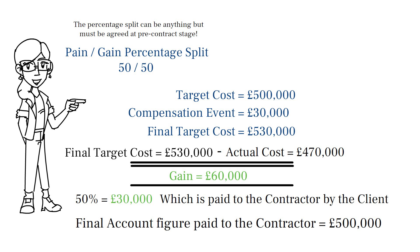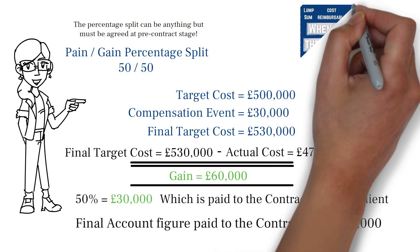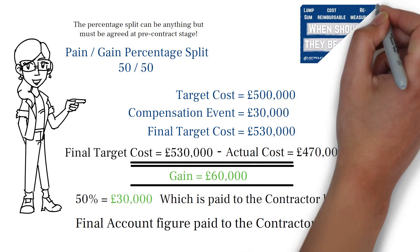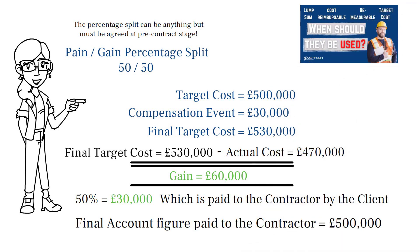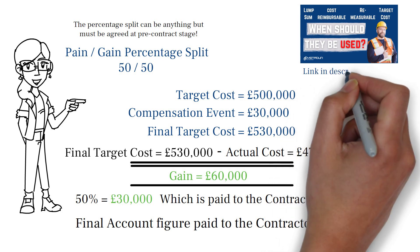The premise behind this type of payment is hoped to incentivise the contractor to bring the project under the target cost as much as practically possible, to achieve a bonus payment for themselves, and it also gives a saving back to the client over their original budget. For more on the pros and cons of a target cost contract, why not check out our Construction Contracts Compared video. We'll pop the link in the description below.